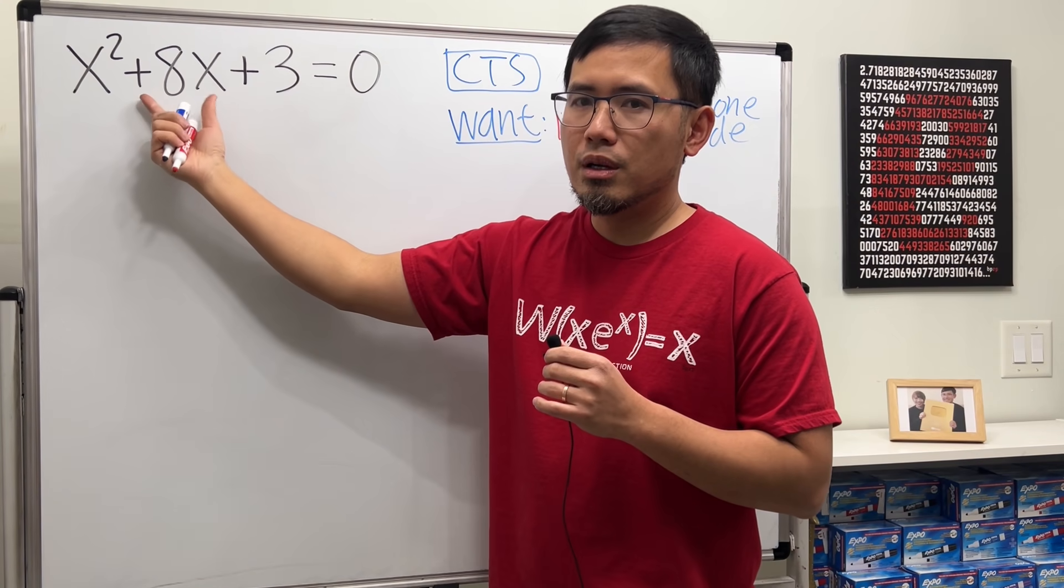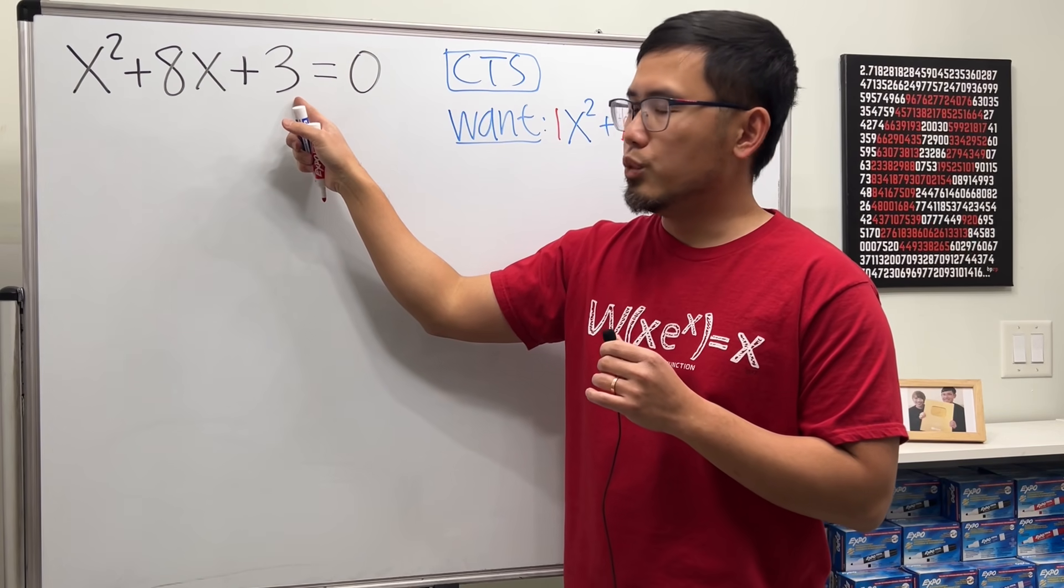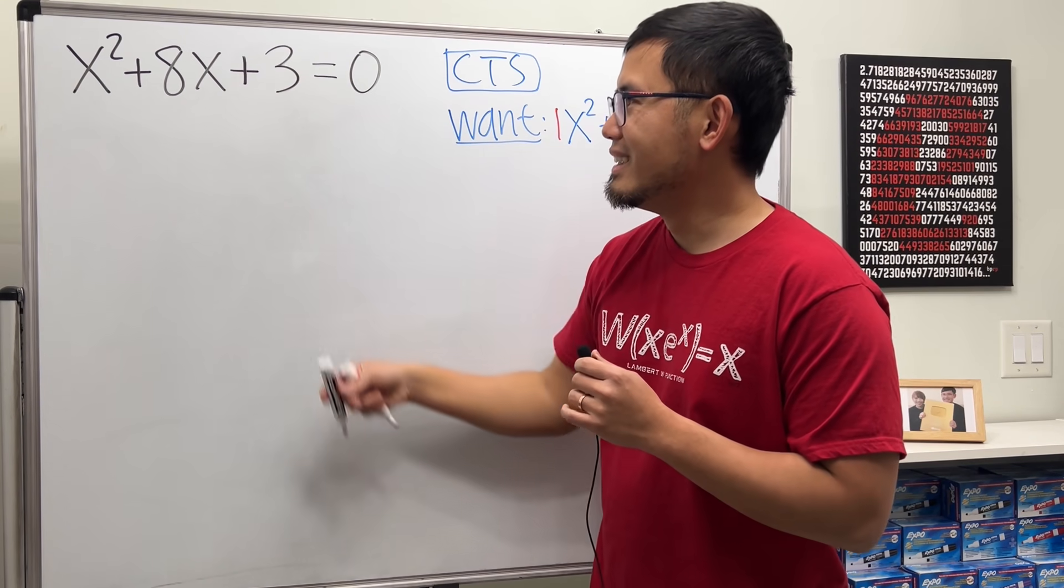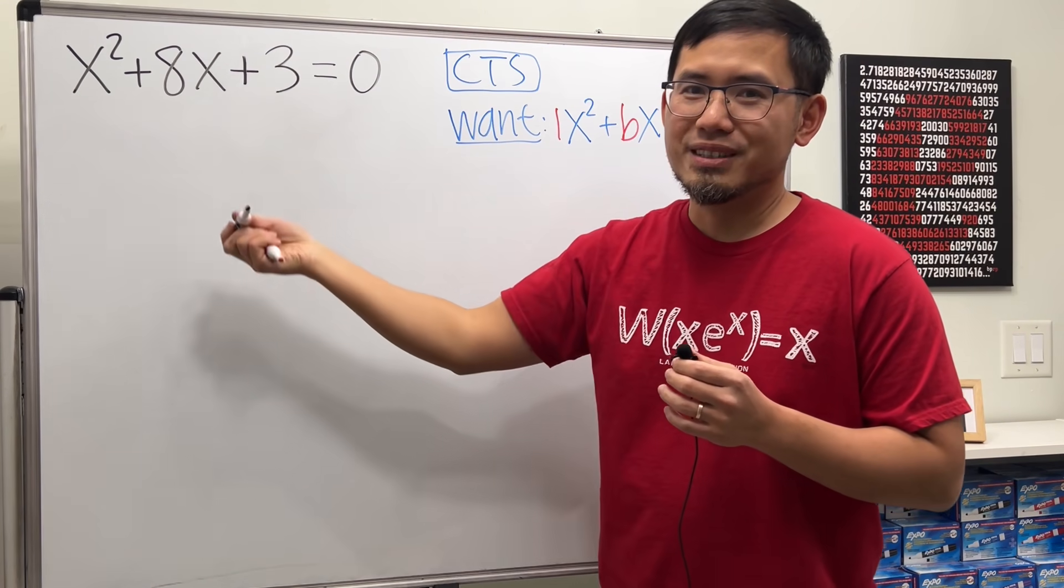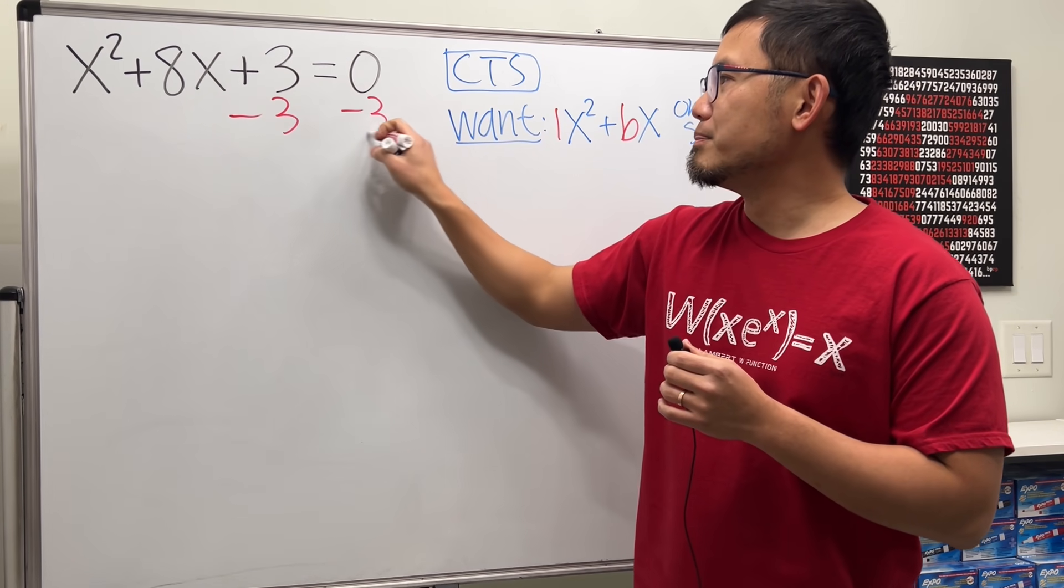And then also right here the next thing is plus bx and that's this term right here, right, plus 8x, that's good. That said, we don't want the plus three right here. In fact the three is bad because with the three this is not factorable for us. So let's go ahead, minus three on both sides.